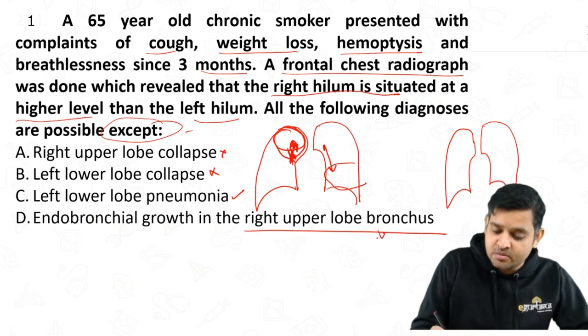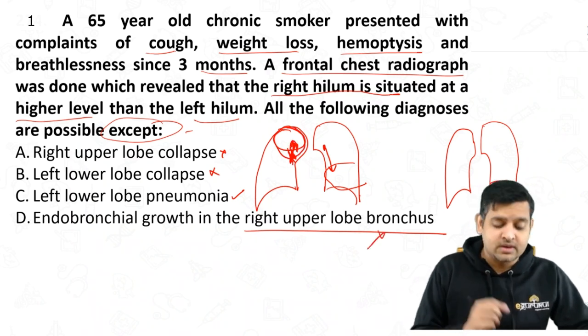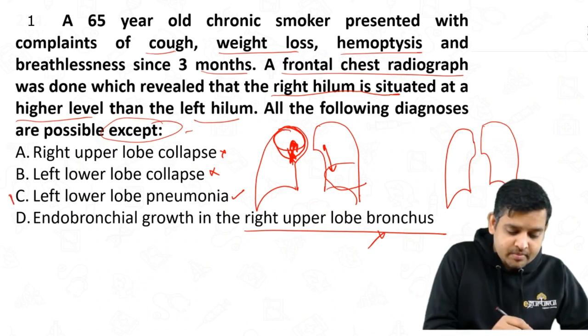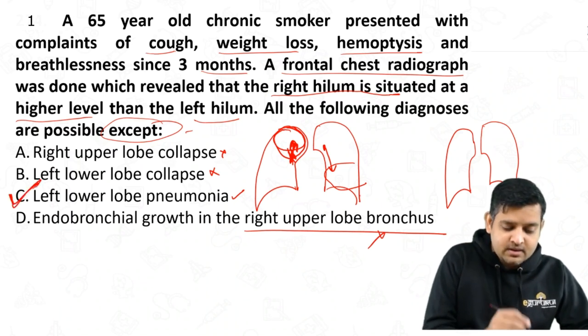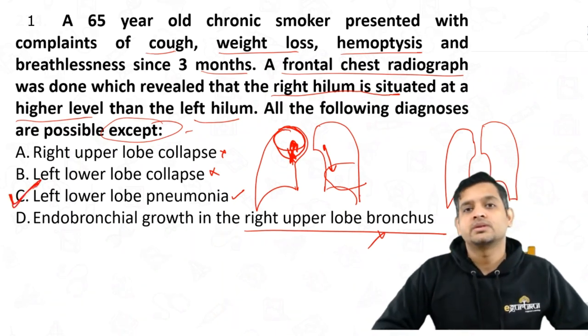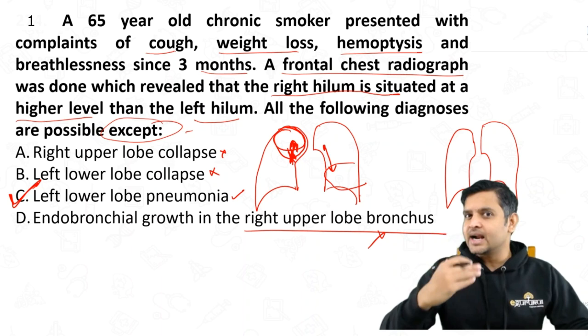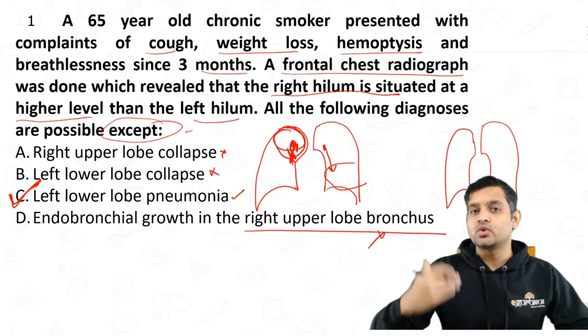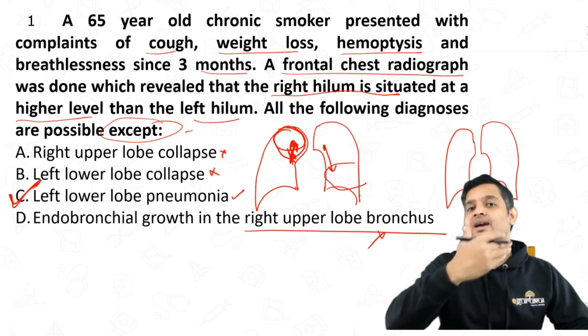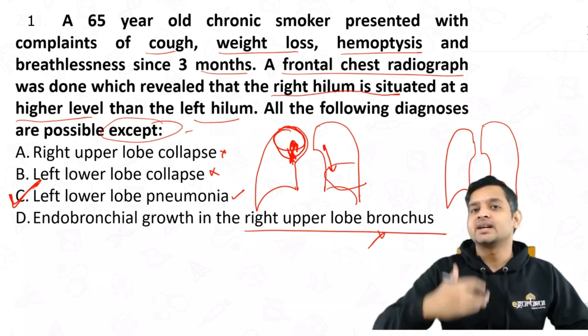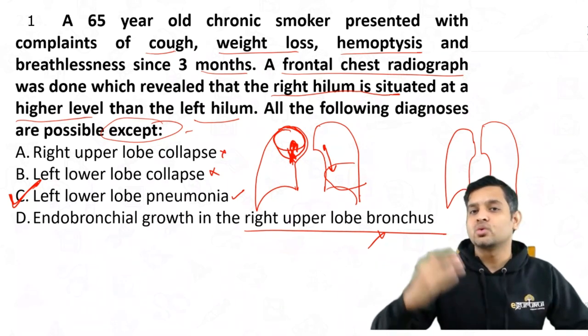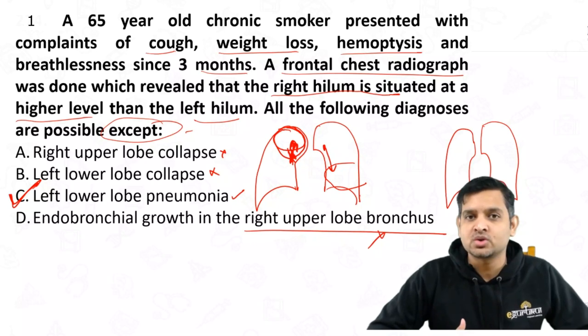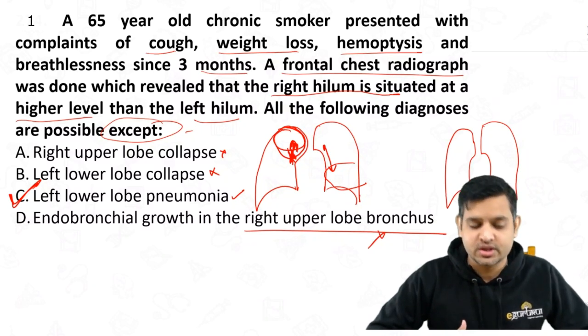That cannot be the answer. The answer is left lower lobe pneumonia. This was an understanding-based question — only if you know why the hilum is getting pulled up or down will you be able to solve this question.